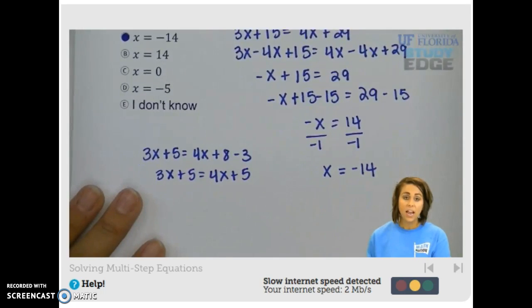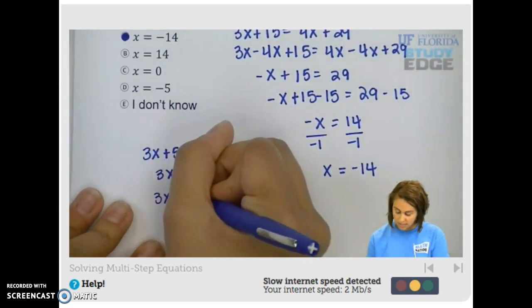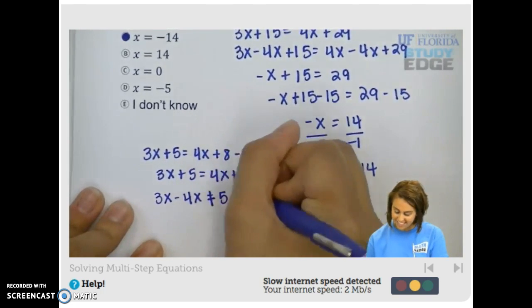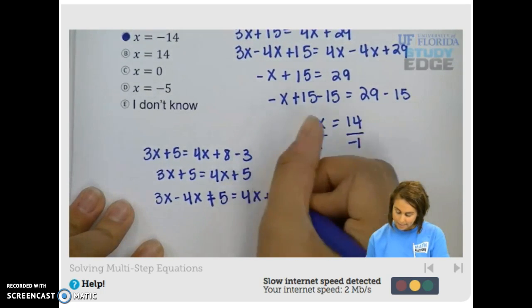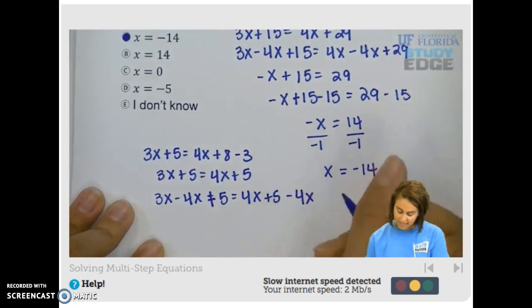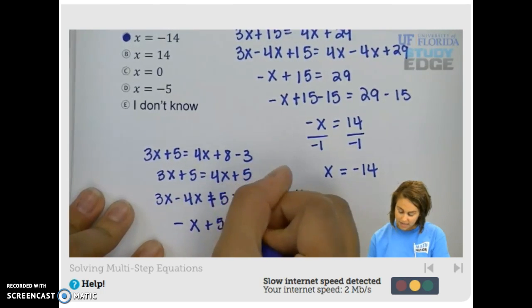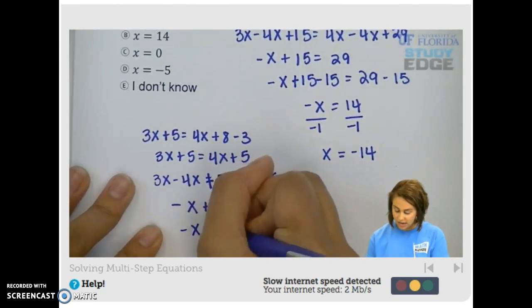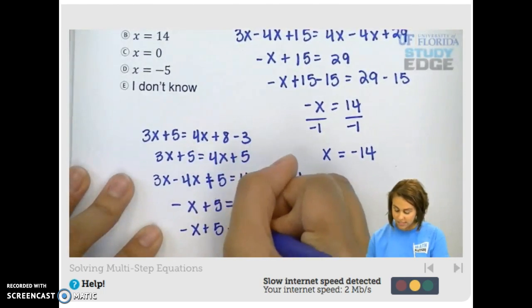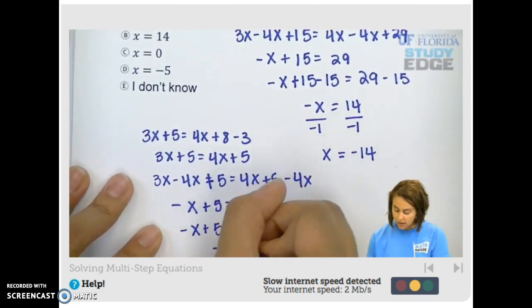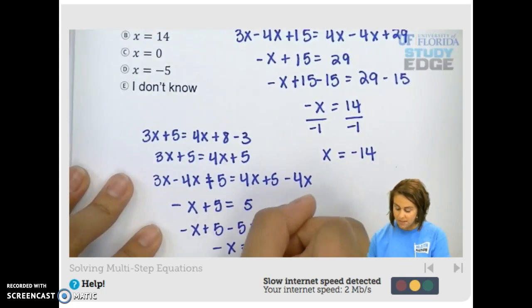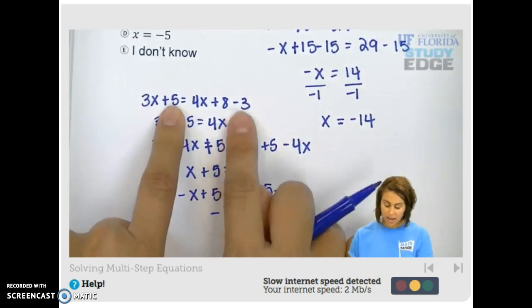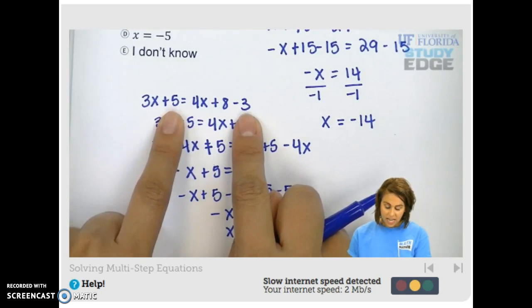When you subtract your 4x from both sides, you have negative x plus 5 equals 5, right? And when you subtract your 5 from both sides to get x by itself, you have negative x equals 0, which is the same as x equals 0. That's, of course, an incorrect answer, but that's what happens if you don't distribute correctly.